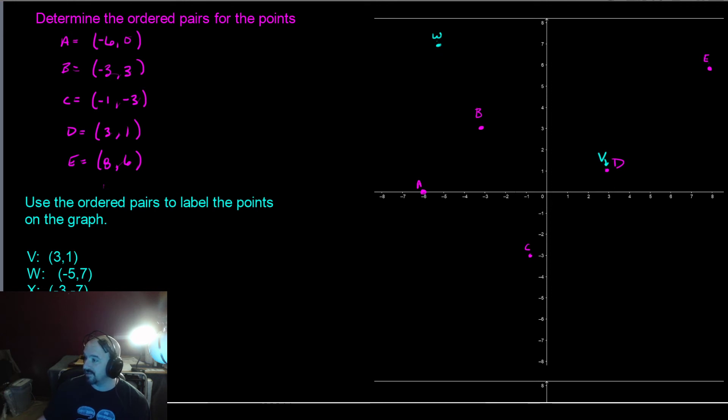X, we have negative 3, negative 7, so we go over negative 3, and then we go down 7. About there.